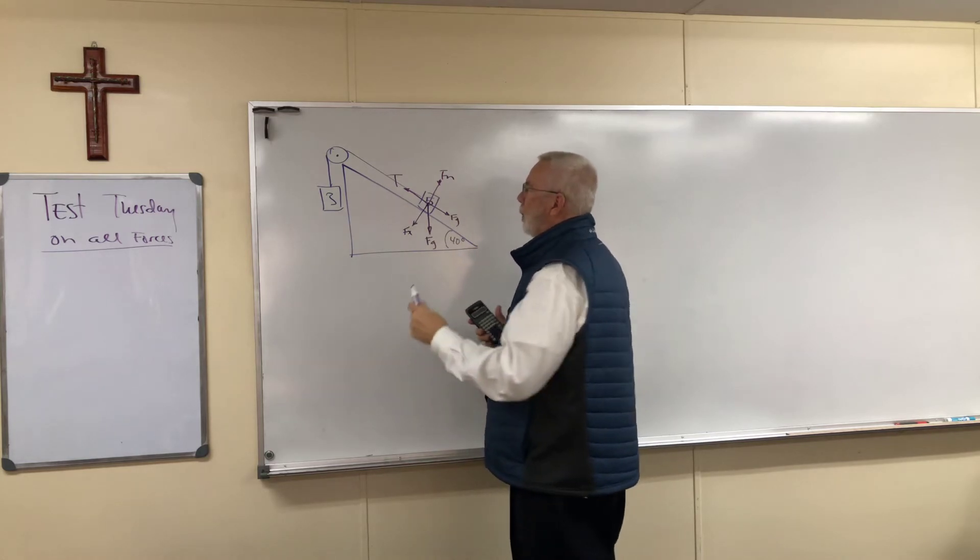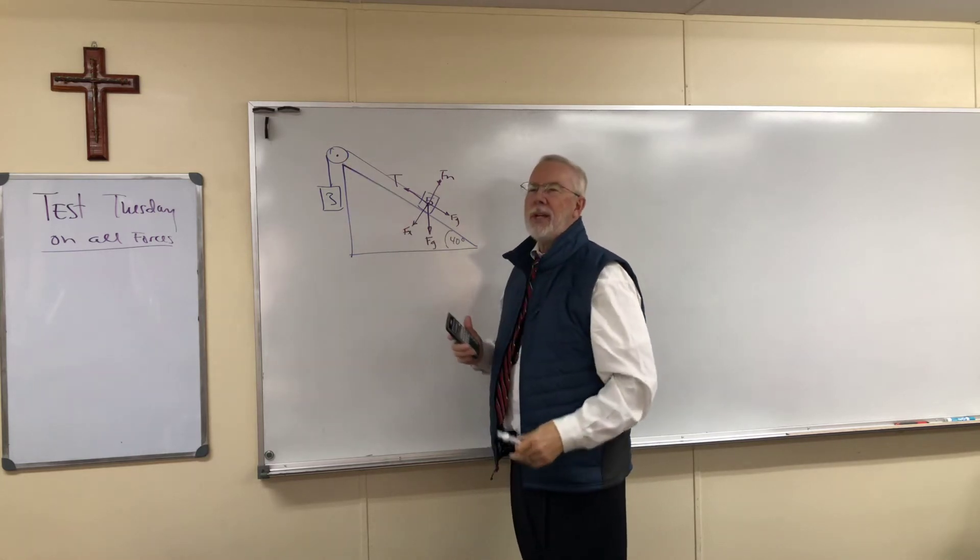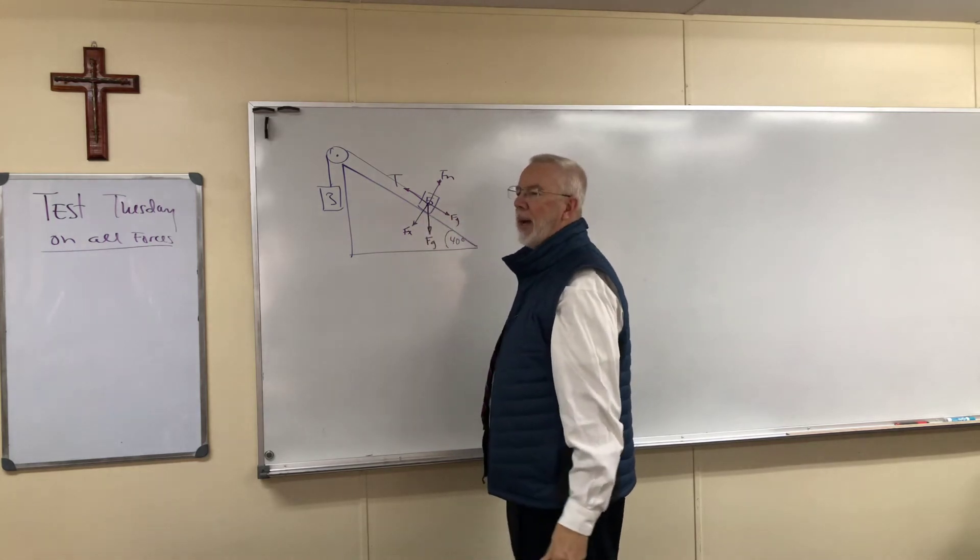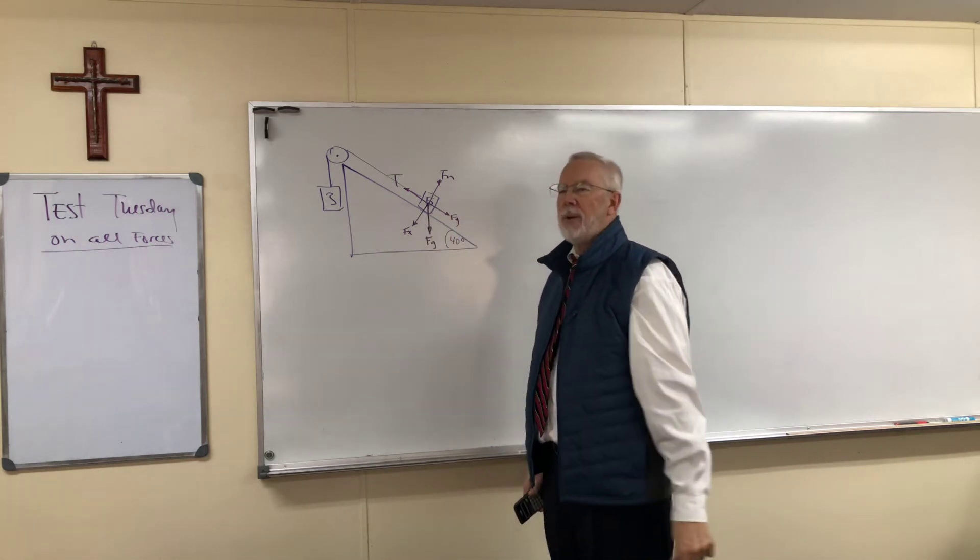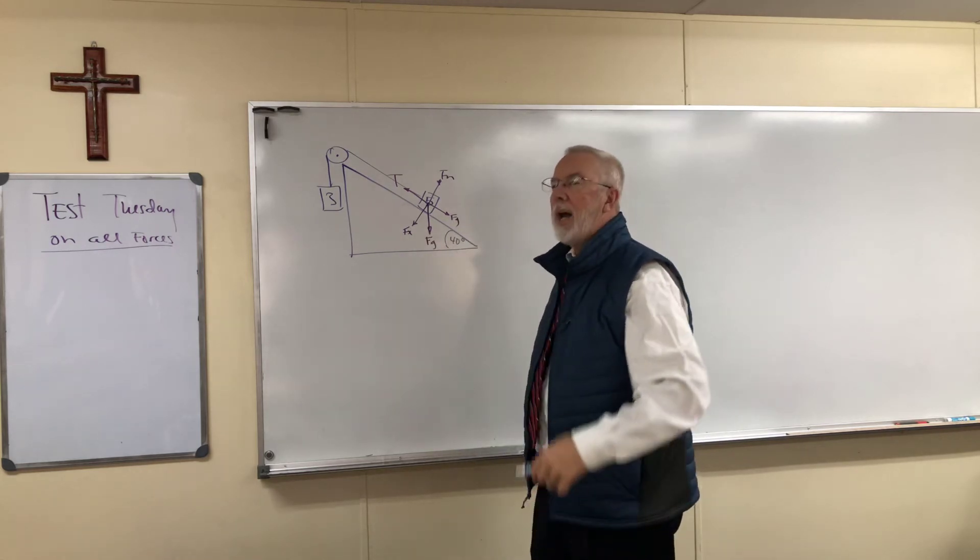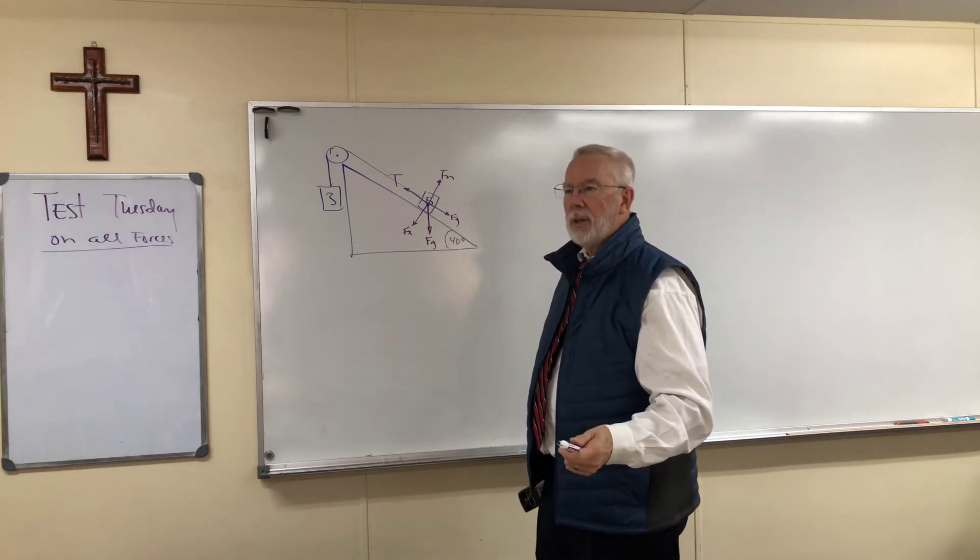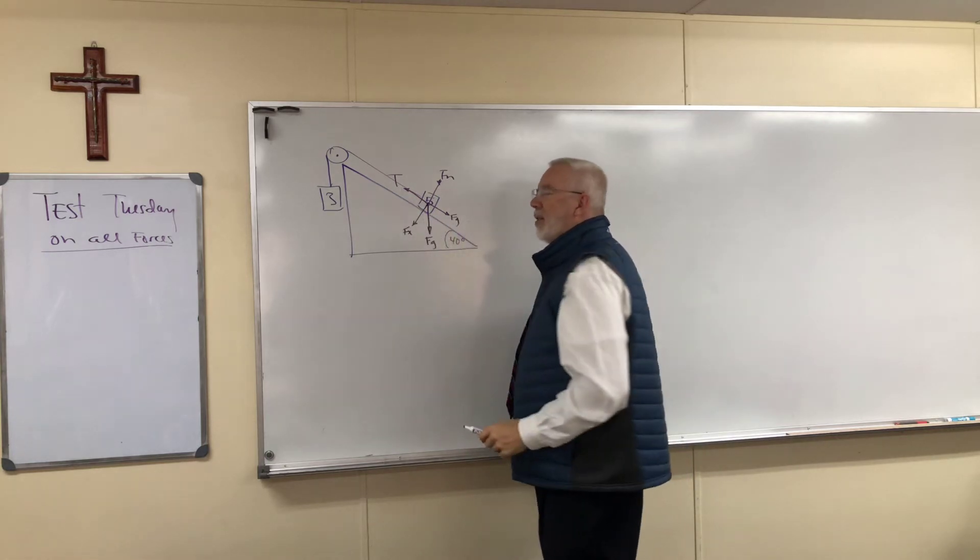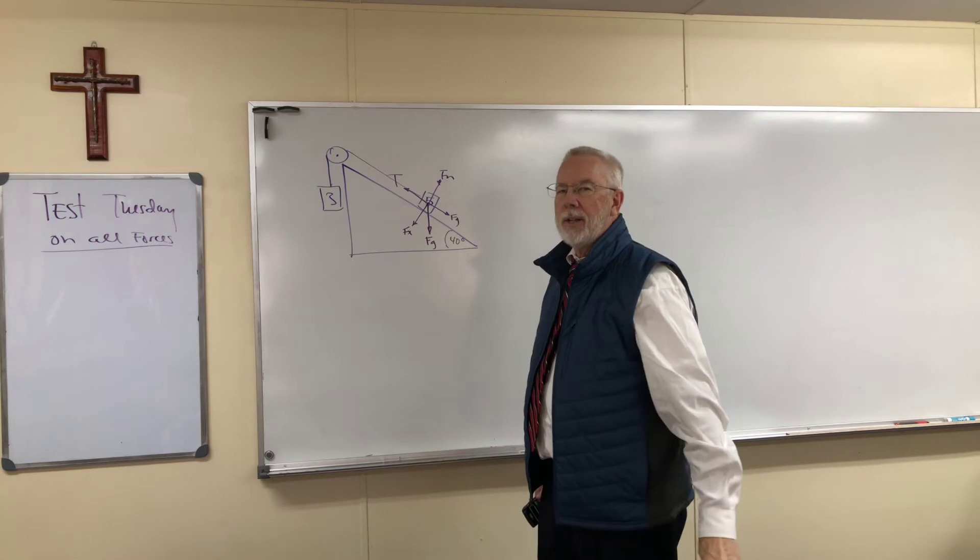Now if it was being pulled up the incline plane and there was friction, then we'd have to be putting the friction on the back side because it's trying to prevent the motion. So the tension would have to overcome the f of y and the friction. So whether the friction shows up on this side or this side depends on which way the thing is moving.